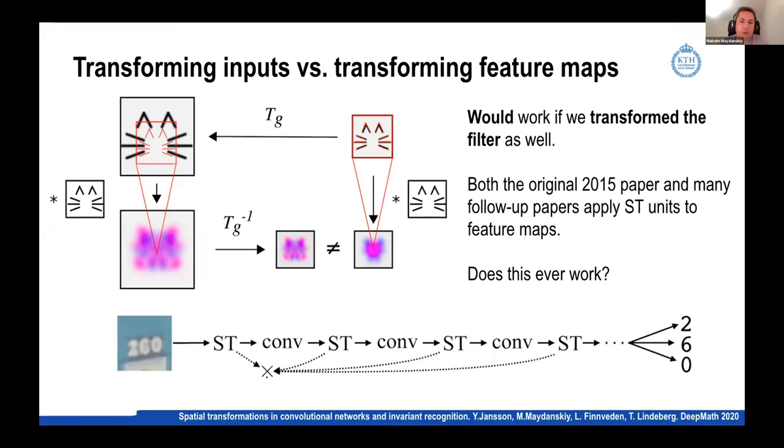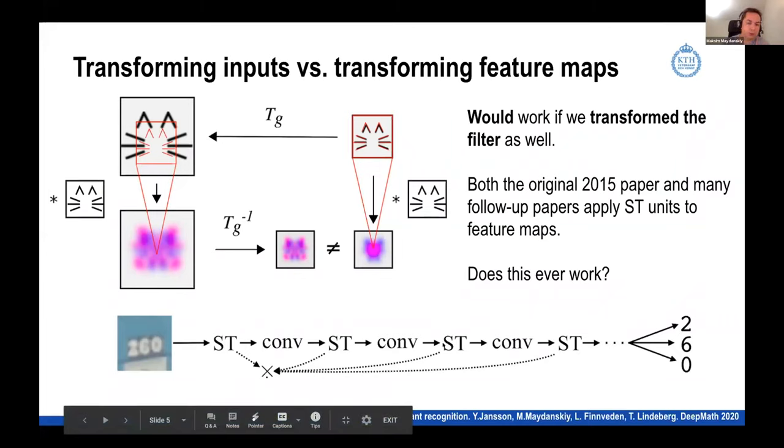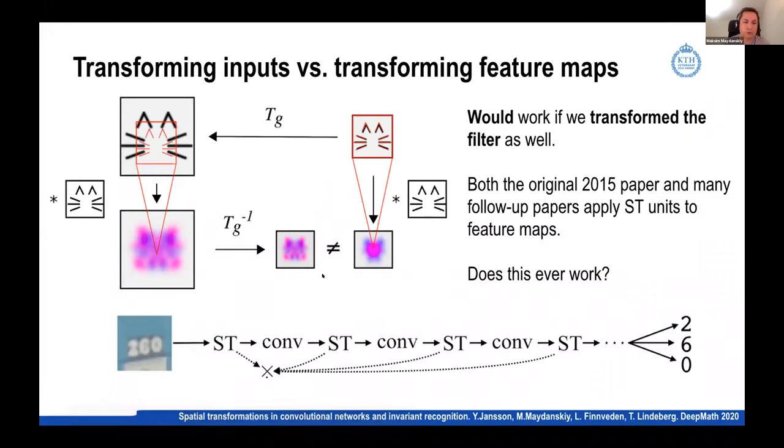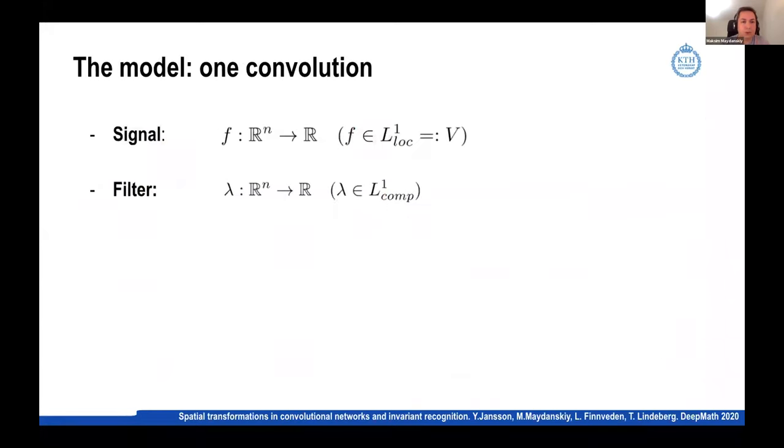So despite this problem, both the original paper that proposed this and a fair number of follow-up papers apply these ST units to feature maps. And on the bottom line, I have this picture from the original paper where you can see that the spatial transform units are interspersed with convolutions with an attempt to learn the street number, one of these 260 things. So this has been used. And so let me go into why this doesn't work.